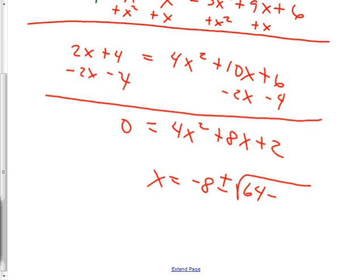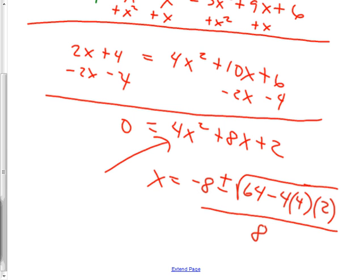minus 4 times a, which is 4, times c, which is 2, all over 2a, which is 2 times 4, is 8. And you'd simplify that down and you'd have your answer. Now hopefully it'll just factor for you. It's a lot easier than using the quadratic formula. Next one.